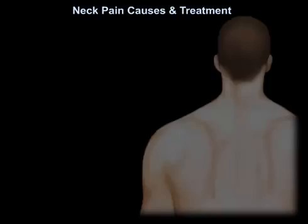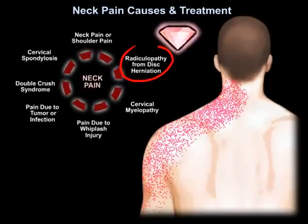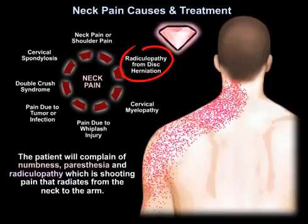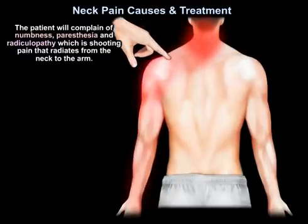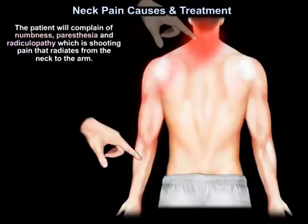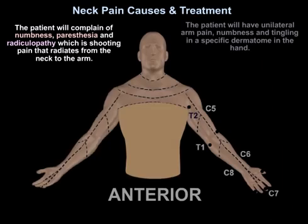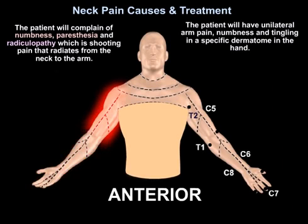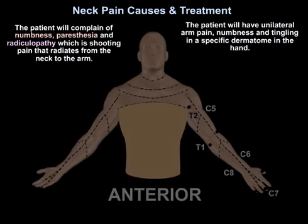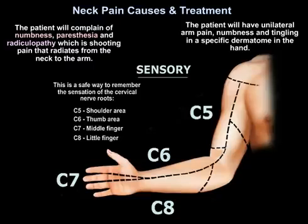An important cause of neck pain is disc herniation. The patient will complain of numbness, paresthesia, and radiculopathy, which is shooting pain that radiates from the neck to the arm. The patient will have unilateral arm pain, numbness, and tingling in a specific dermatome in the hand.